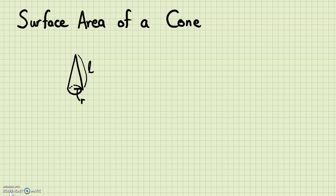As it is with any other three-dimensional objects, when we're trying to find the surface area, we'll need to open this up and see what shapes compose this three-dimensional object. If you open a cone up, it's actually going to look something like this — it's going to look like a piece of pizza, and the circle base would be that.